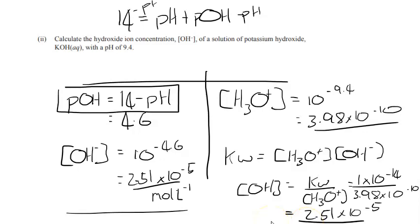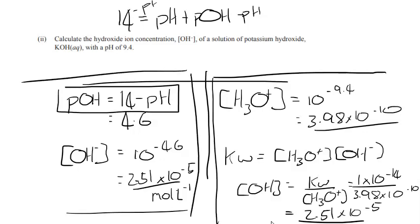So you can choose either option. This is the one that you'll see in the marking schedule. This is another way that is potentially easier. I think as long as you get to the same answer, you'll be fine. So yeah, that's the acids and bases calculation questions. Now we have finished the topic.